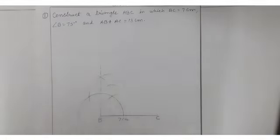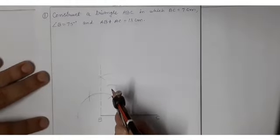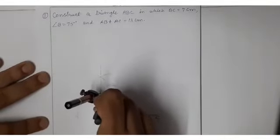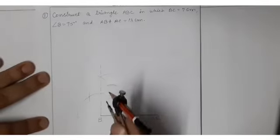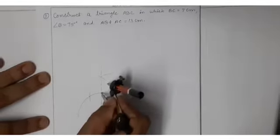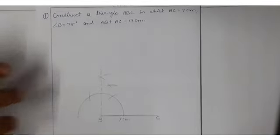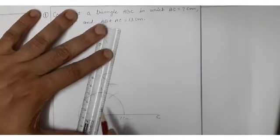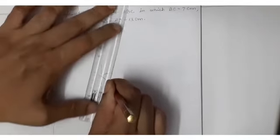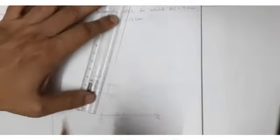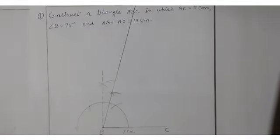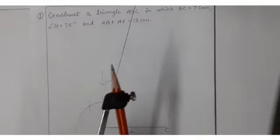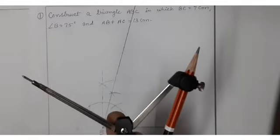For making 75 degrees, you have to open this arc, measure it, and bisect it — one point from 60 degrees and a second arc from 90 degrees — then join from B. After drawing 75 degrees, you have to make one arc of 13 centimeter. Open the arc with help of your scale and compass — I have measured 13 centimeter here.